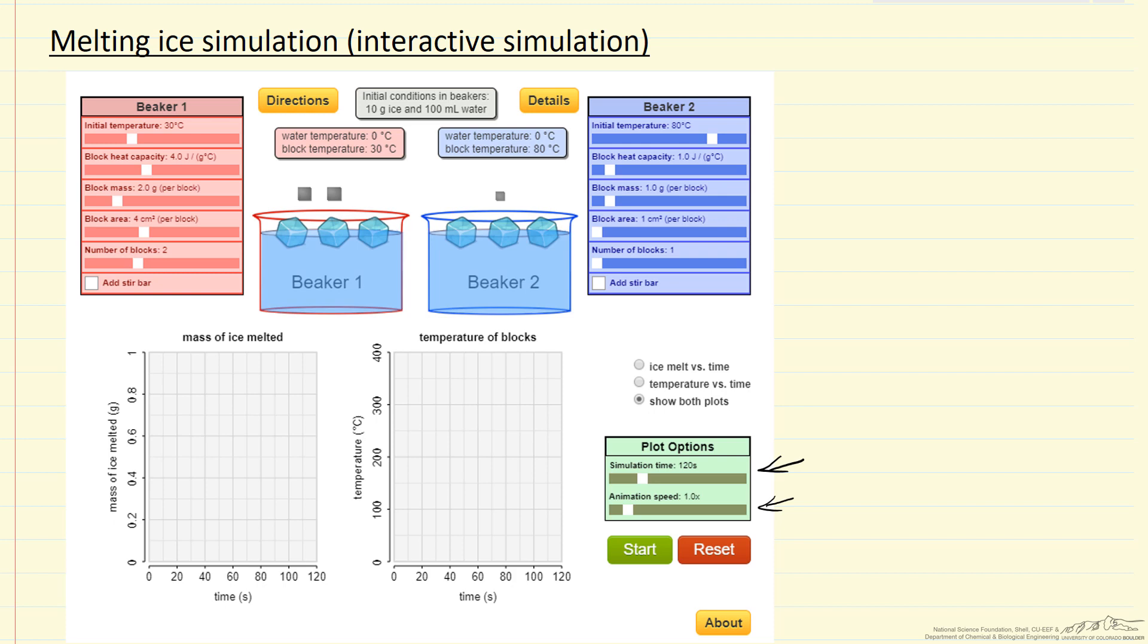Now if we add enough blocks, or blocks with high enough heat capacity, then what we're going to see is that all the ice will melt, and now the water will actually warm up above zero degrees C.